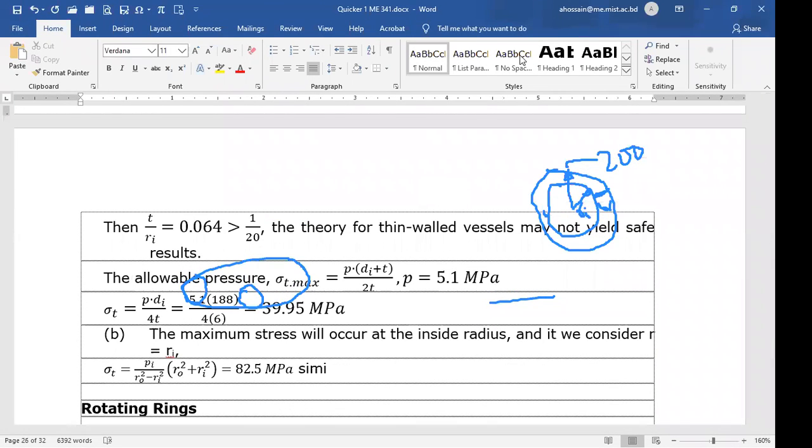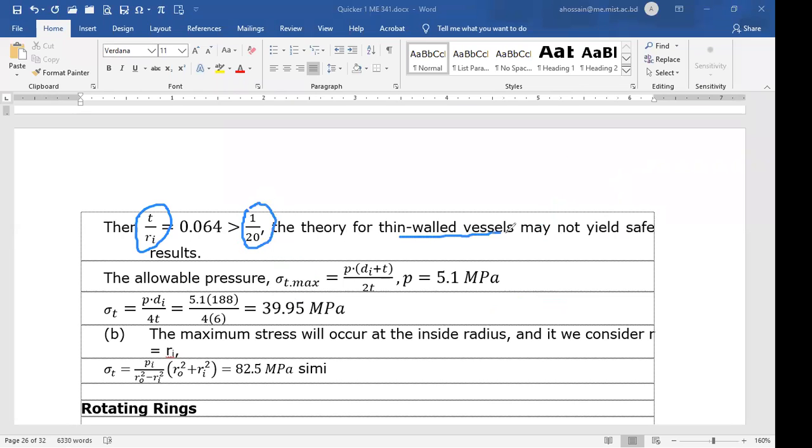When you check T by R_I, you can see that this is greater than the limit. So this thin wall theory may not yield safe results. If you have higher than the limit, the thin wall theory may not be applicable.